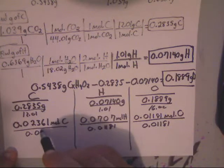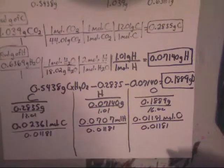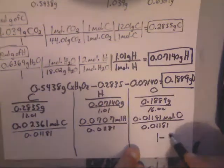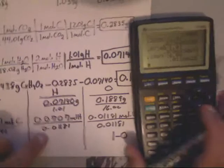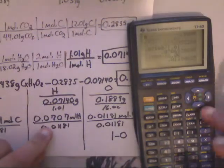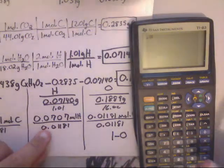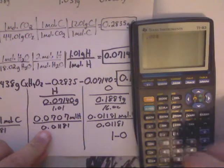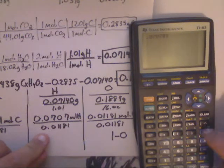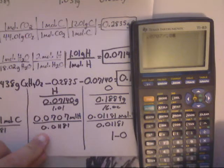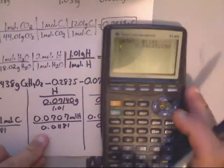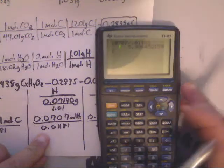Put this number in. I got 0.0707 divided by 0.01181. And I get 5.986. Guess what number that is. That number is really just 6. So that's going to be 6 hydrogens.